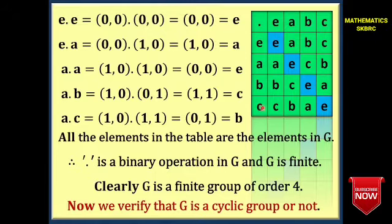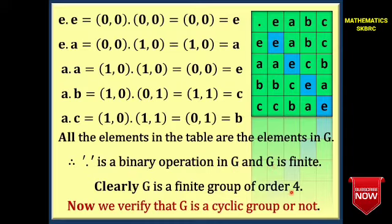C·E = C, C·A = B, C·B = A, and C·C = E. We observe that all elements in the binary operation table are elements of G. Therefore, · is a binary operation in G, and G is a finite group of order 4.